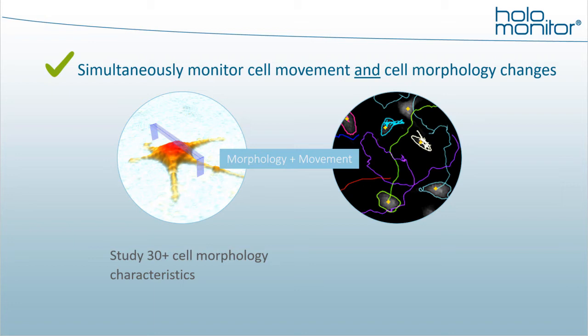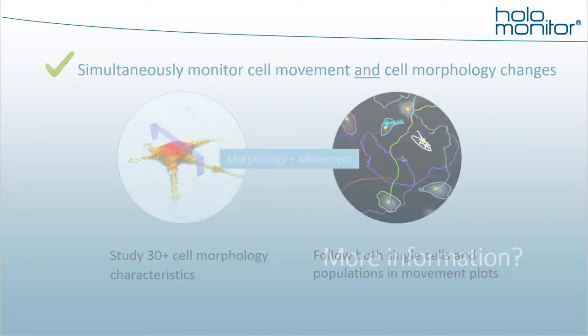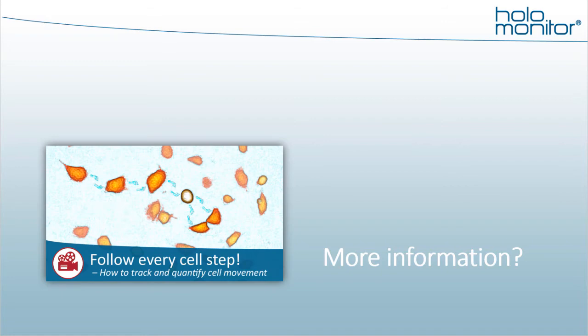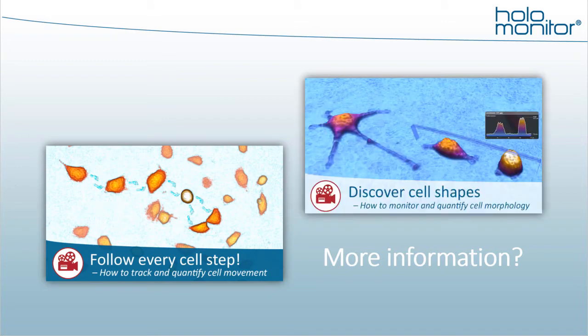The Holomonitor live cell morphology assay lets you study over 30 cell morphology characteristics, many of which are unique for digital holographic microscopy. The outstanding individual cell tracking of the system lets users follow in detailed movement plots both single cells and cell populations in their migration and motility behavior. If you want to learn more about tracking and quantifying cell movement and morphology, watch our other webinars and browse our publication library featuring more than 150 peer-reviewed publications by worldwide Holomonitor users.